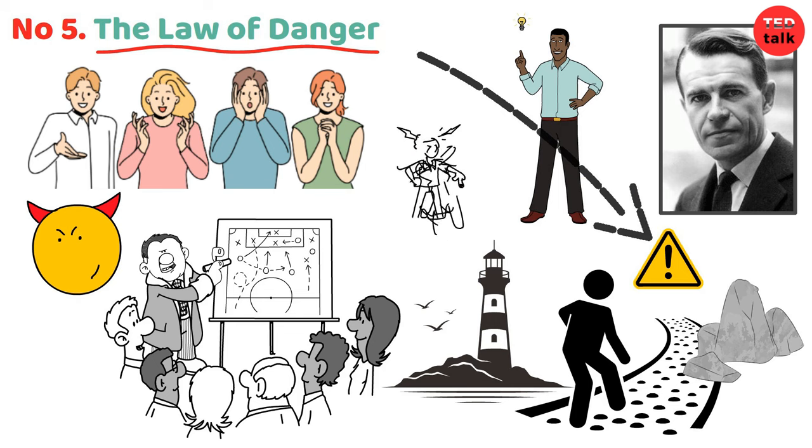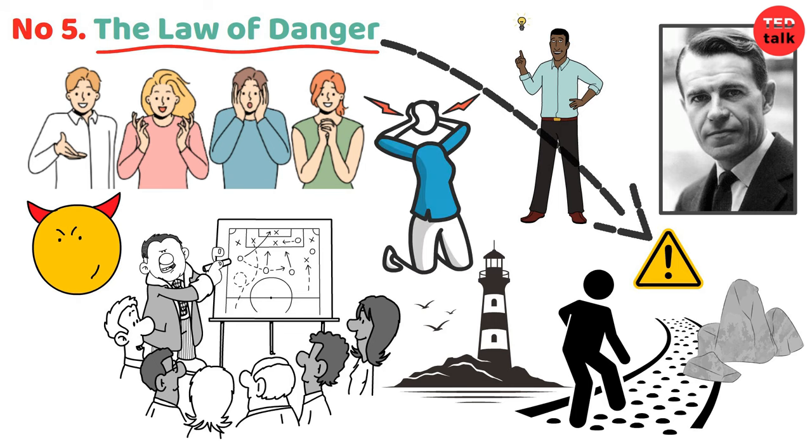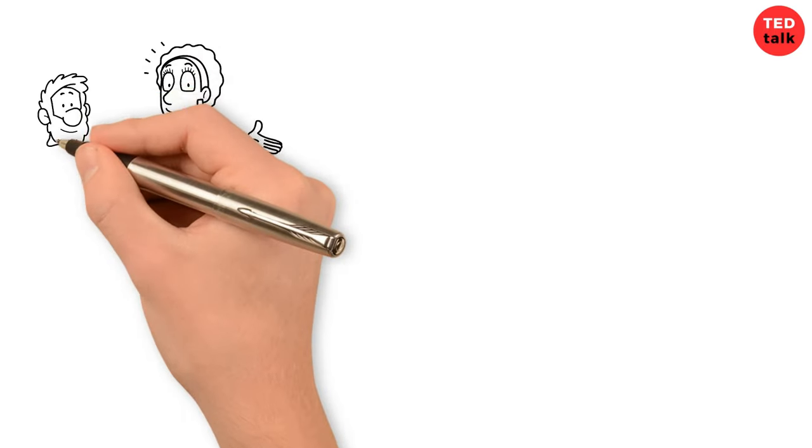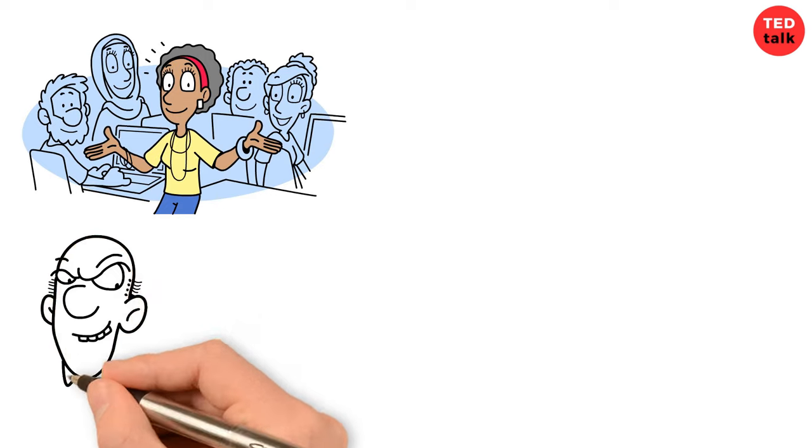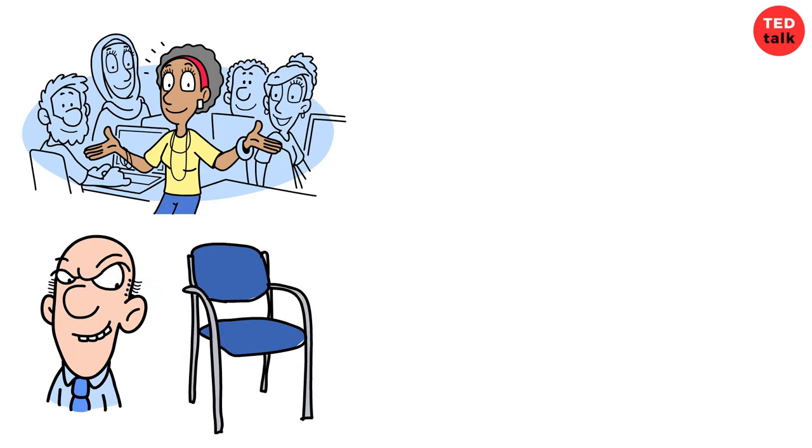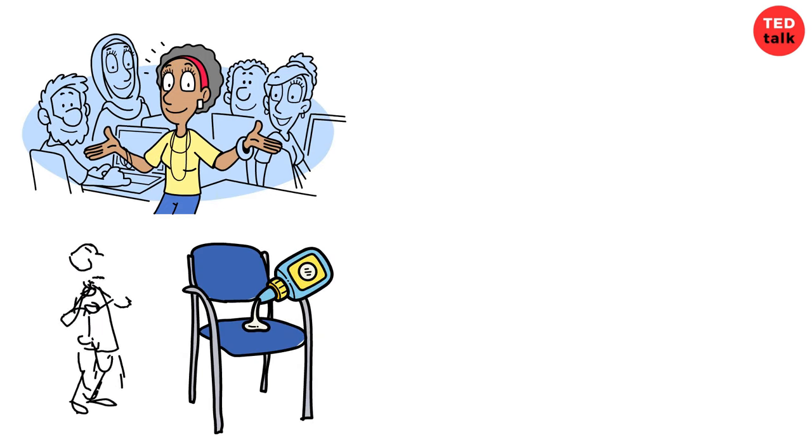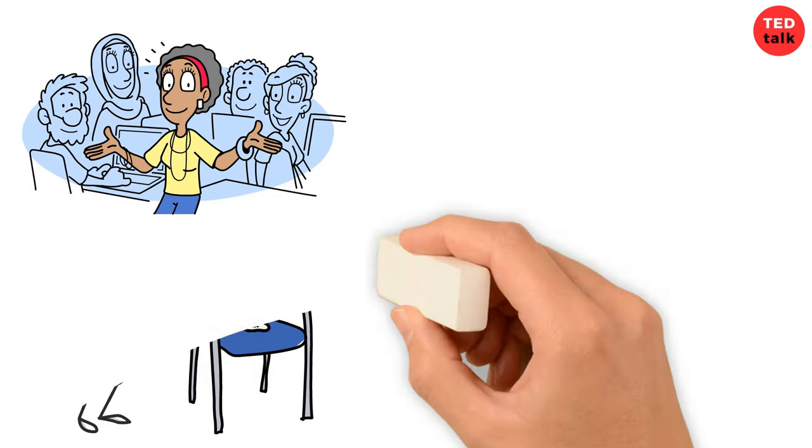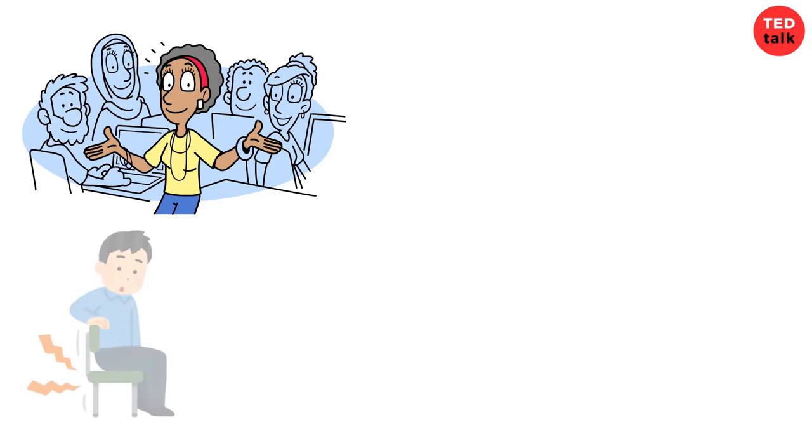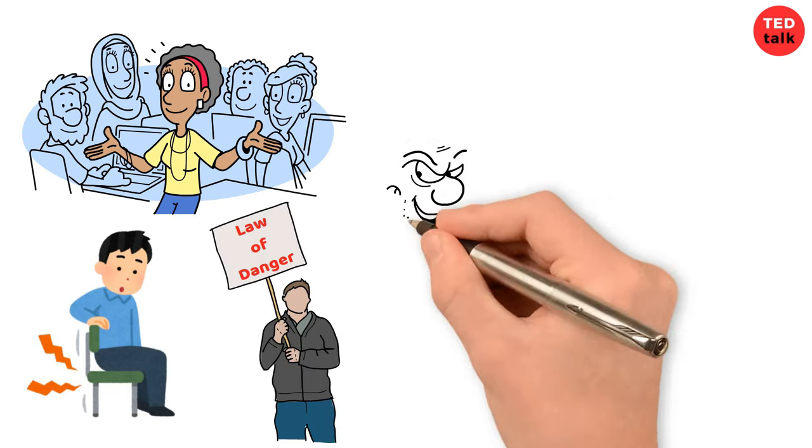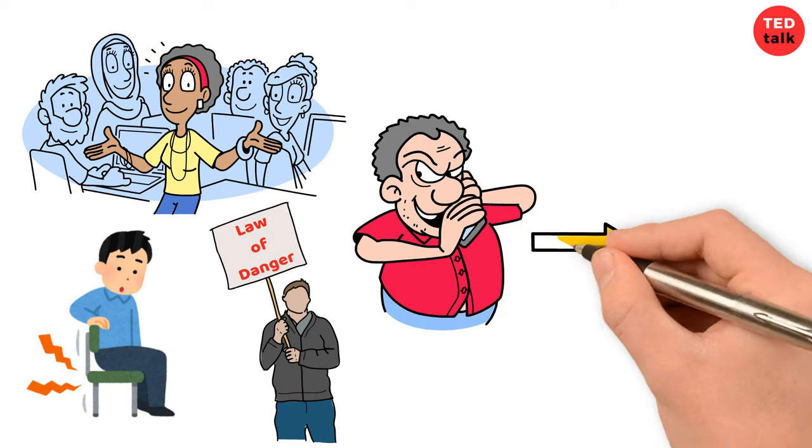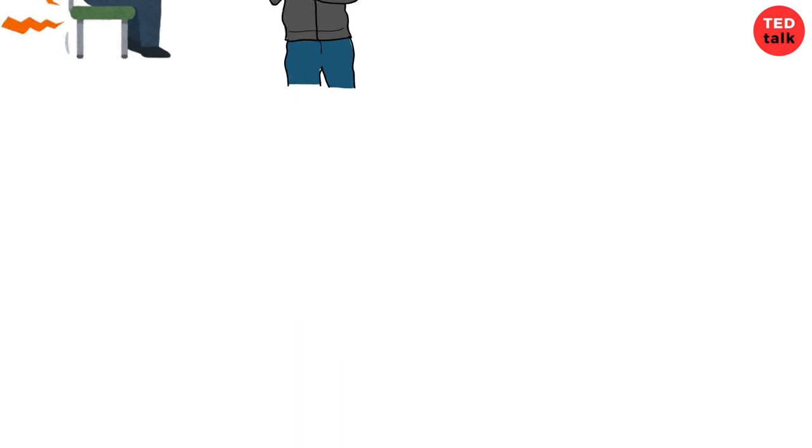Think about a day at school when you and your classmates are working on a group project. One of your friends decides to play a prank by putting glue on someone's chair, thinking it'll be funny. But when the person sits down, they get stuck and end up getting hurt. That's an example of the law of danger: someone's silly actions lead to real harm and danger.